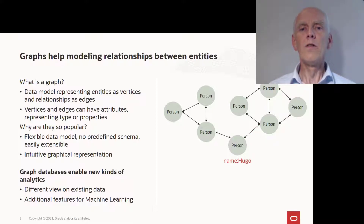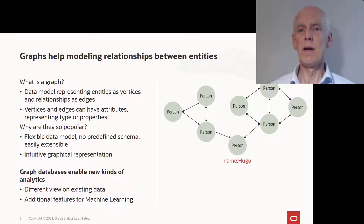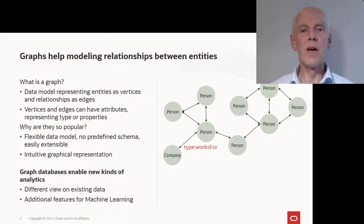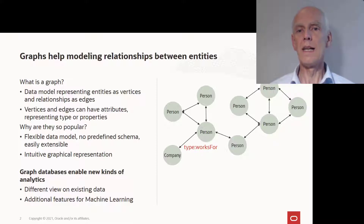One interesting aspect of graph databases is that they don't have a fixed schema. In my social network example I can add a new vertex of type company and a new edge of type 'works for', and this will not break my existing applications or analysis.